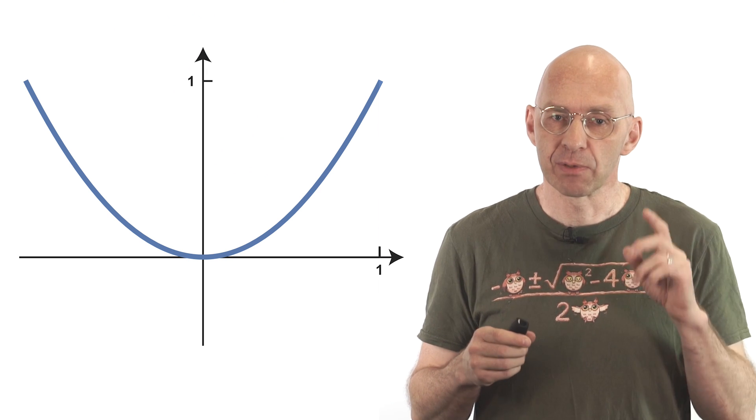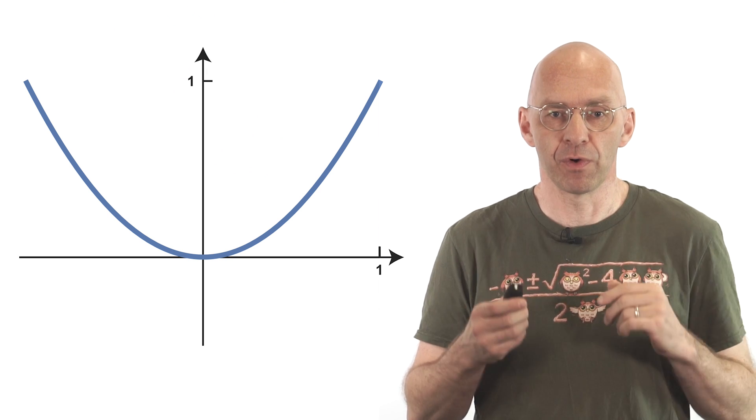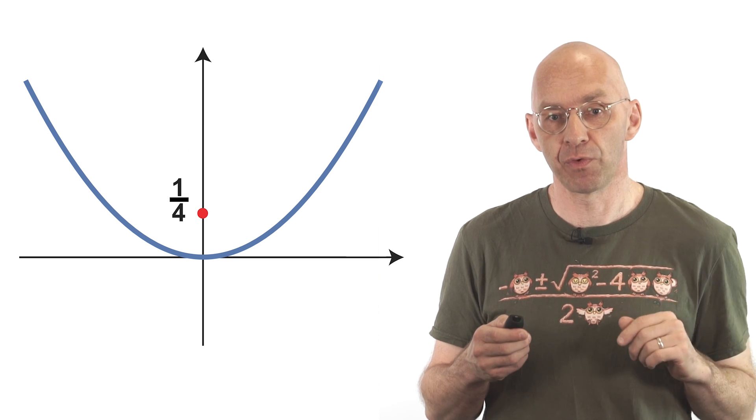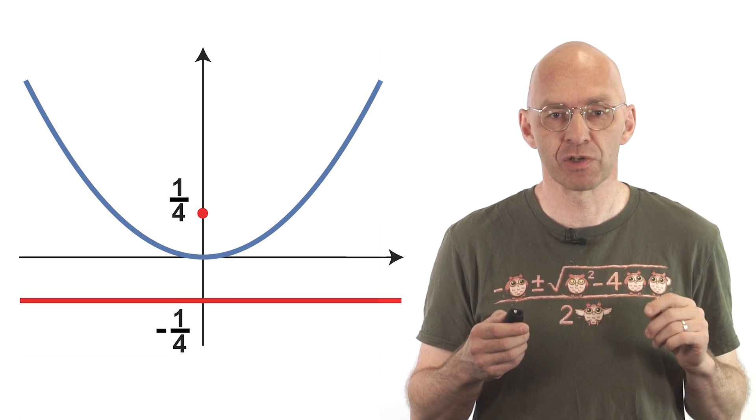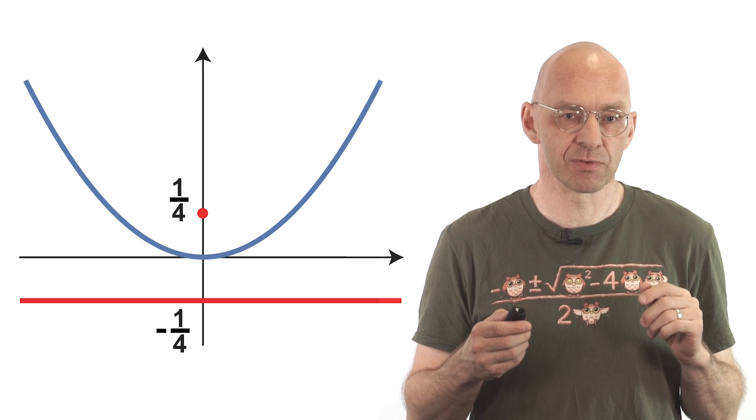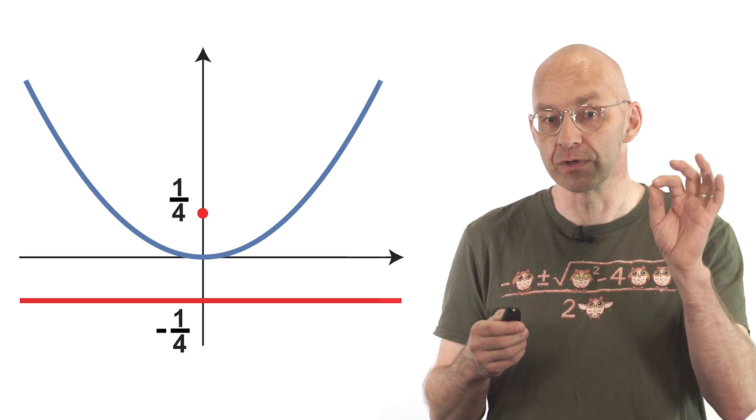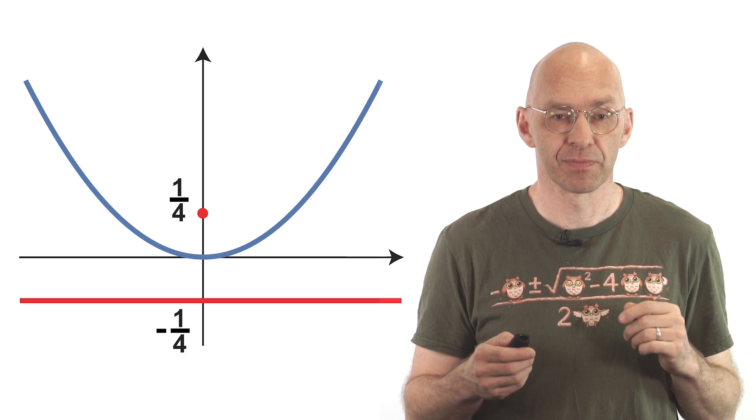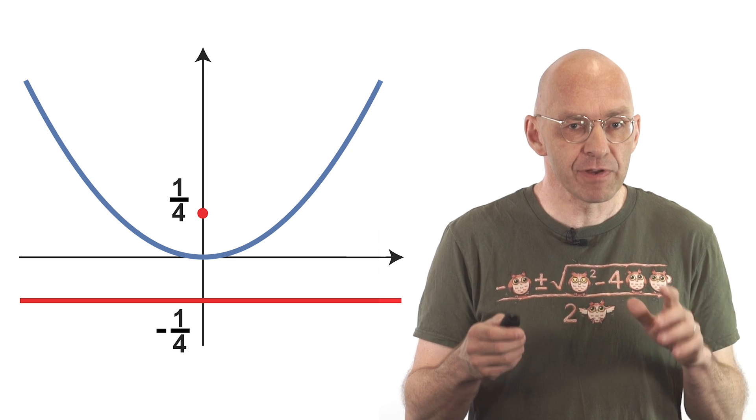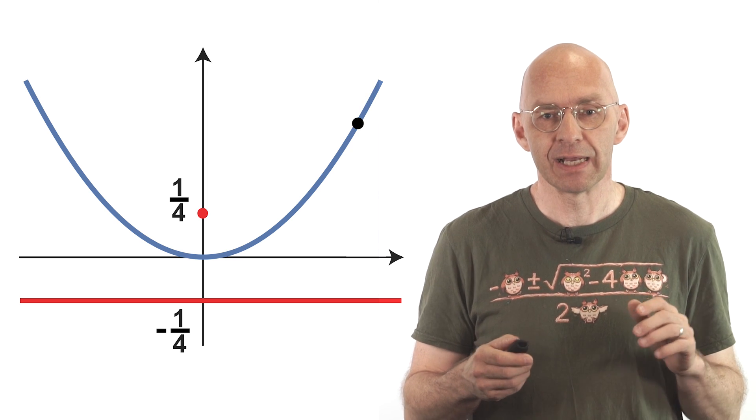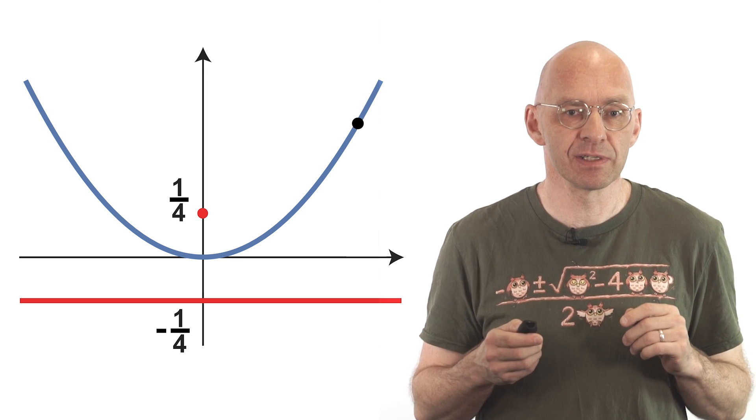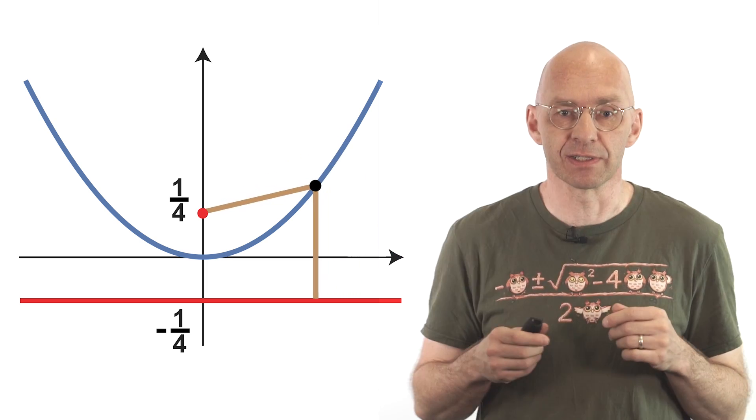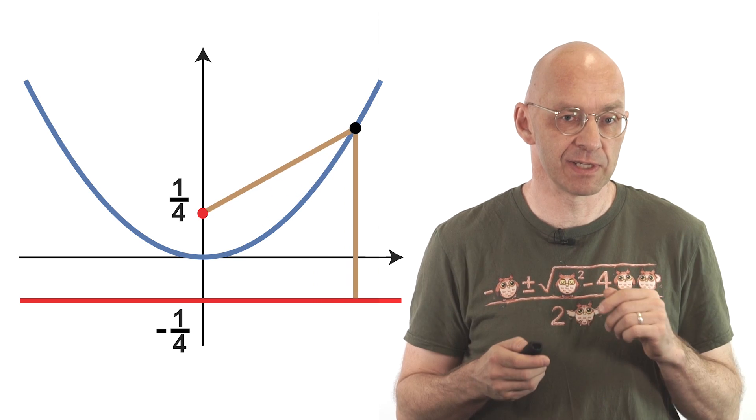Did you know that the point 0, 1/4 and the horizontal at y equals minus 1/4 are super special for the parabola y equals x squared. The point is called the focus and the line is called the directrix of the parabola. What's special is that every point on the parabola is exactly the same distance from the focus and the directrix. So these two distances there are always the same.